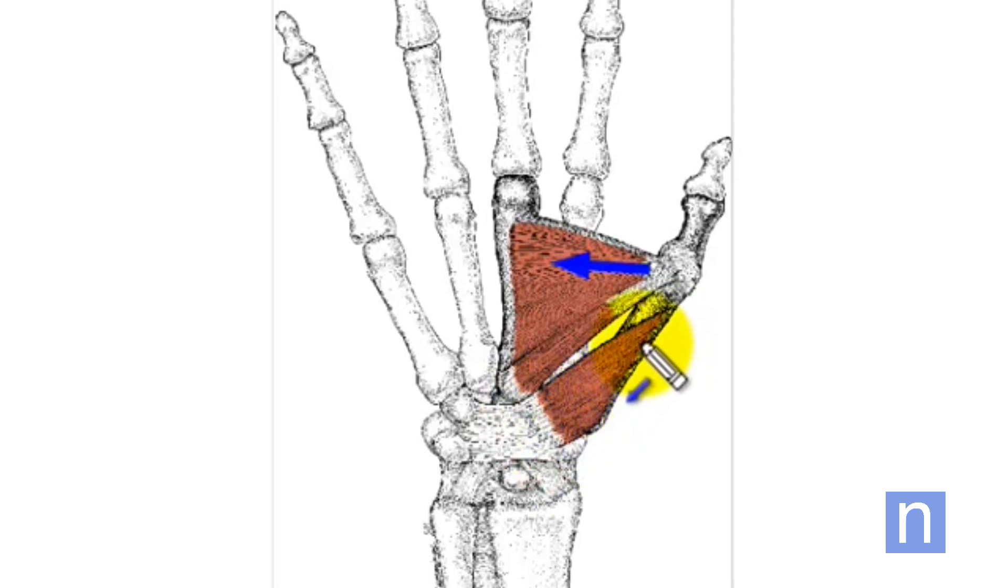It then inserts by wrapping around the back of the metacarpal of the thumb. So its action is to pull the thumb inwards and rotate the thumb around, so that the pulp of your thumb comes into contact with the pulp of your fingers. So this is no longer in the plane of the hand, but you bring the thumb forward and around.